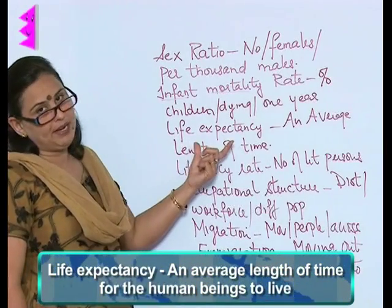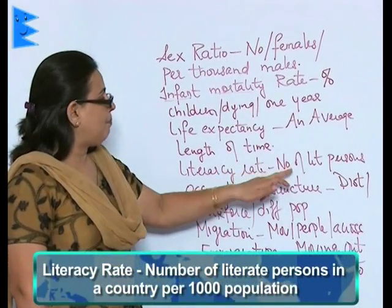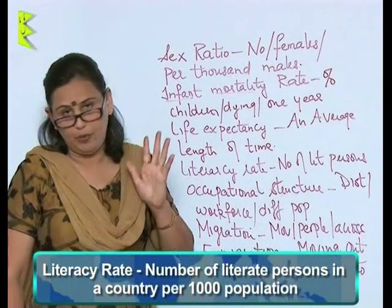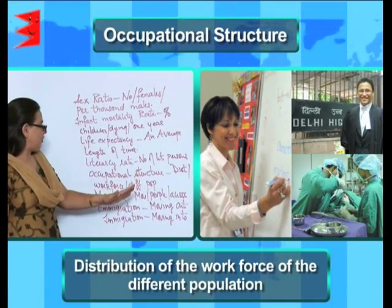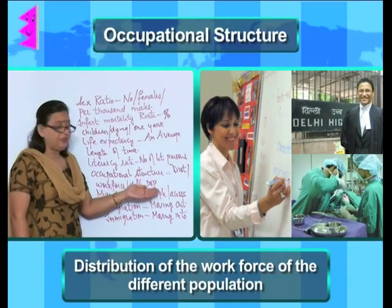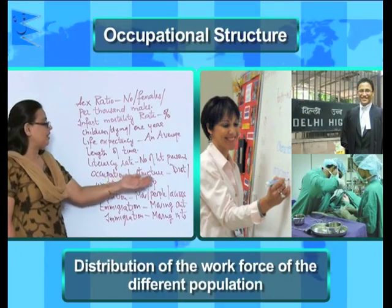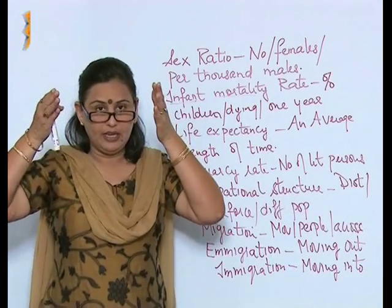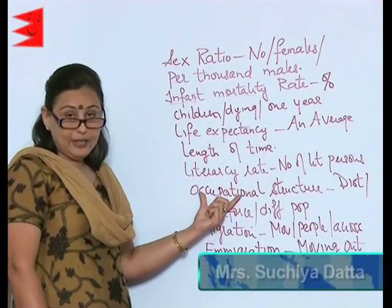Literacy rate is the number of literate persons in a country per thousand population. Occupational structure — when you actually distribute the workforce in a country across different occupations, that is the occupational structure. That is, you divide the people into workers, teachers, lawyers — the occupation that you actually do.